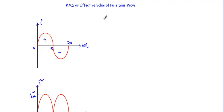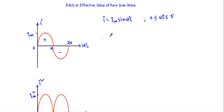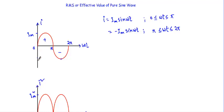Before going to the calculation, let me write down the equation of this current. I will be equal to Im·sin(ωt) for the interval 0 to T/2, where Im is the positive maximum value of the alternating quantity. For the interval T/2 to T, it will be equal to minus Im·sin(ωt), where minus Im is the negative maximum value of the alternating quantity.